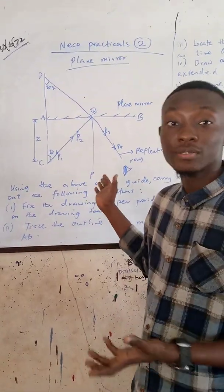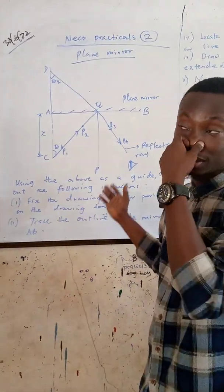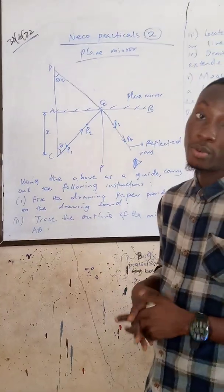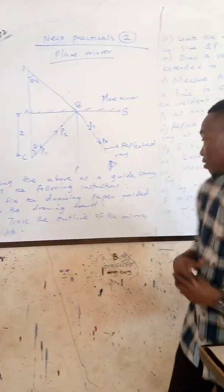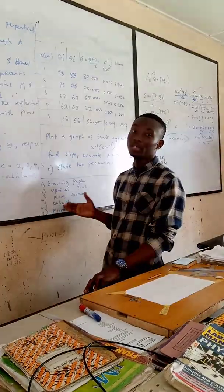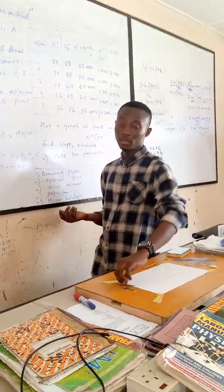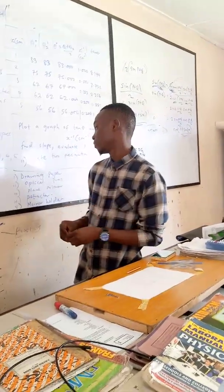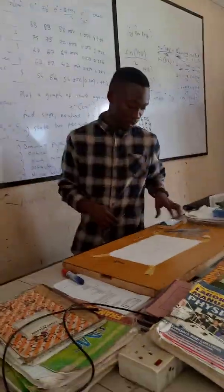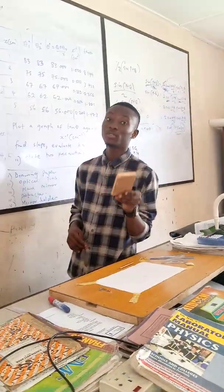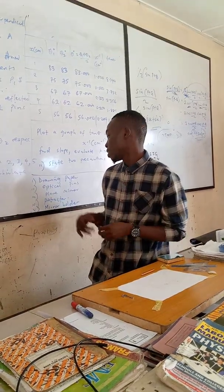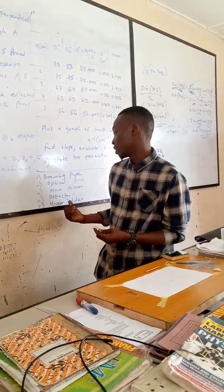This is the second question. The apparatus needed include drawing paper and optical pins — you know what optical pins are? This is called optical pins. The exam should also provide a plain mirror. This is the plain mirror we are going to use for this practical. The exam should also provide a protractor and a mirror holder.